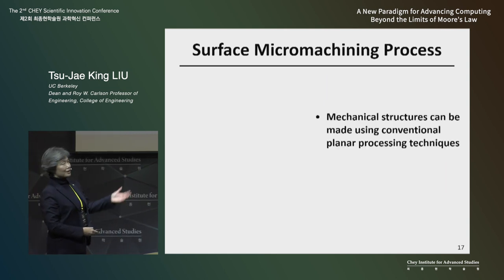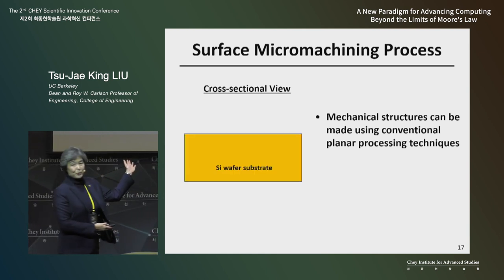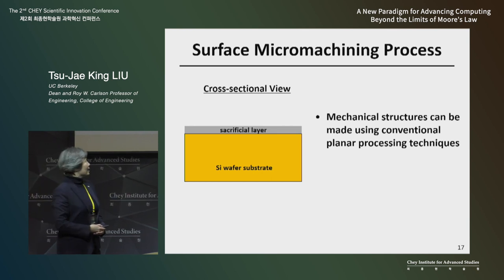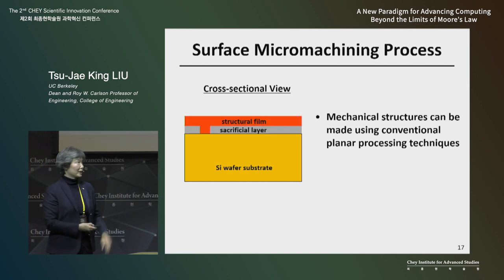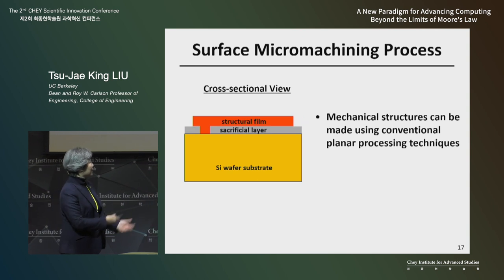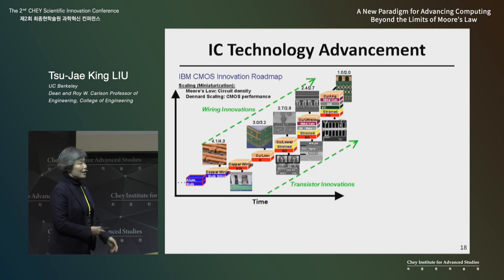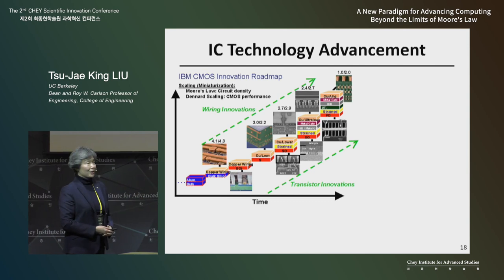To make these mechanical devices, we just use a conventional process developed for integrated circuits. We start with a silicon substrate, deposit and pattern a sacrificial layer using conventional techniques, then we deposit and pattern the structural movable layer. The last step is to selectively remove the sacrificial layer — now that film can move up and down. It turns out the semiconductor industry in CMOS chips has already introduced these air gaps.